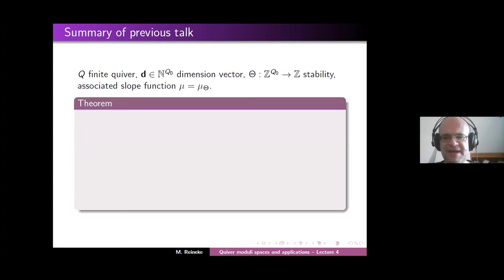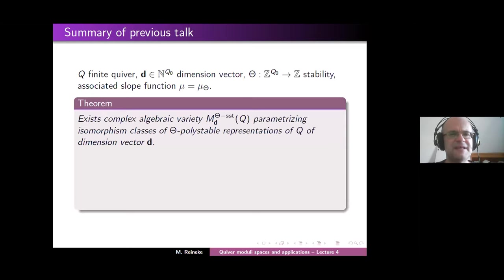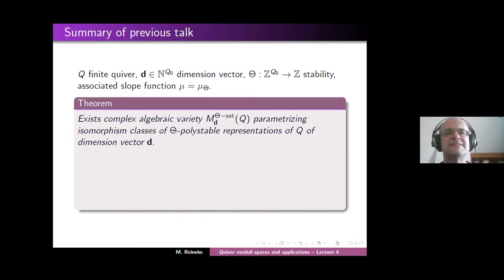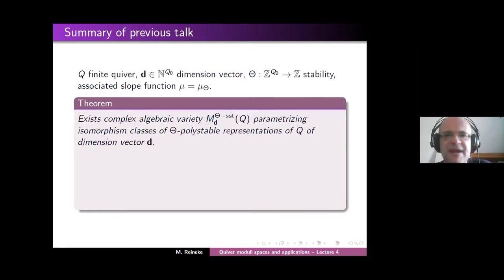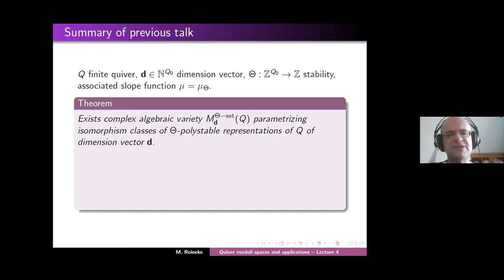Then we formulated the following theorem. First part: there exists a complex algebraic variety, which we denote by M_d^{θ-SST}(Q), which parametrizes the isomorphism classes of the theta poly-stable representations of the quiver Q of dimension vector d. On Monday we saw that this is in perfect analogy with the situation of parametrizing semi-simple representations.